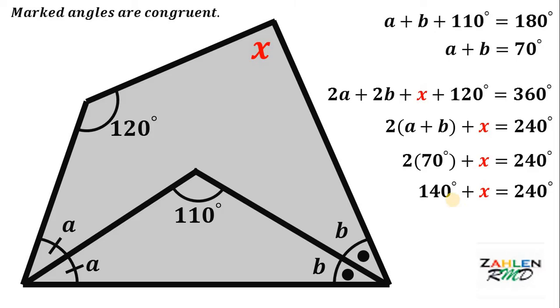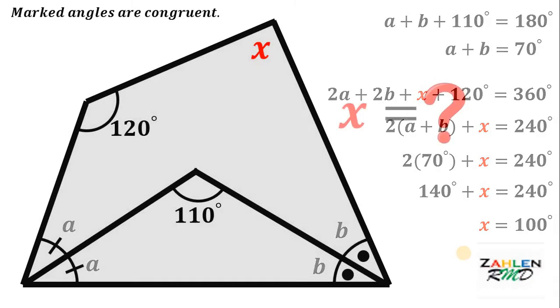Now, to solve for x, what we're going to do is to subtract 140 degrees from both sides. Therefore, the value of x must be equal to 100 degrees. Therefore, the value of x in our figure must be 100 degrees.